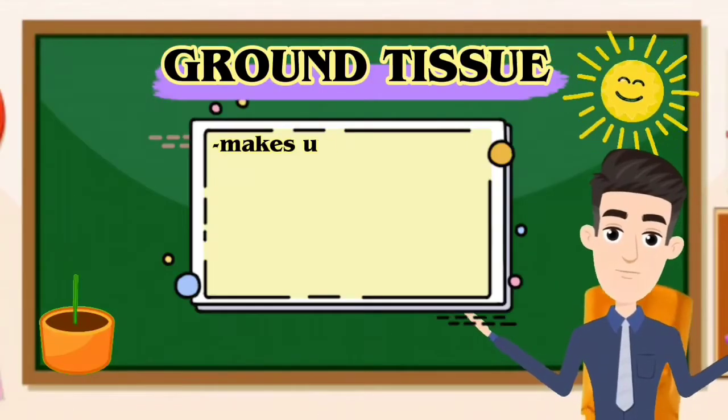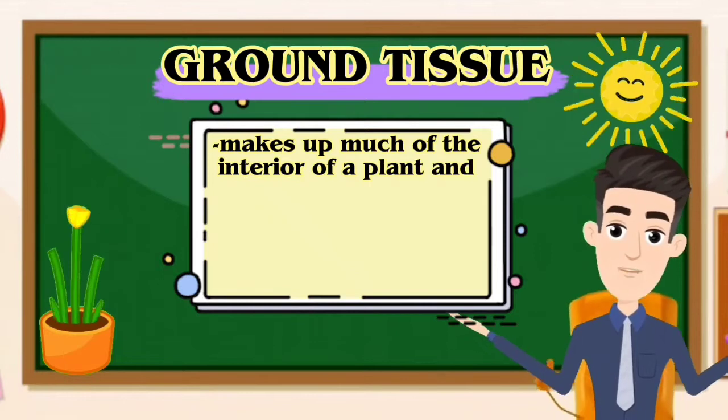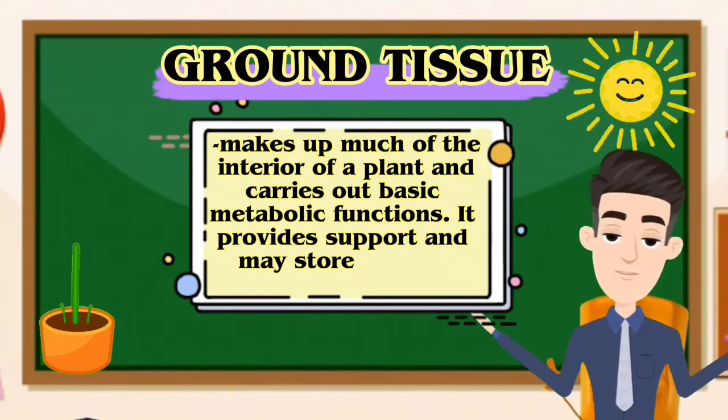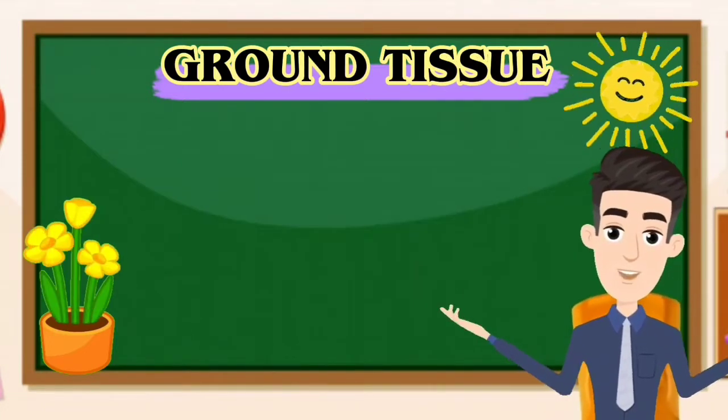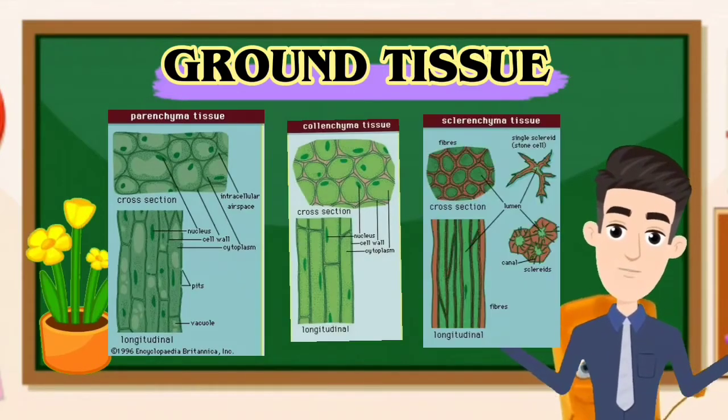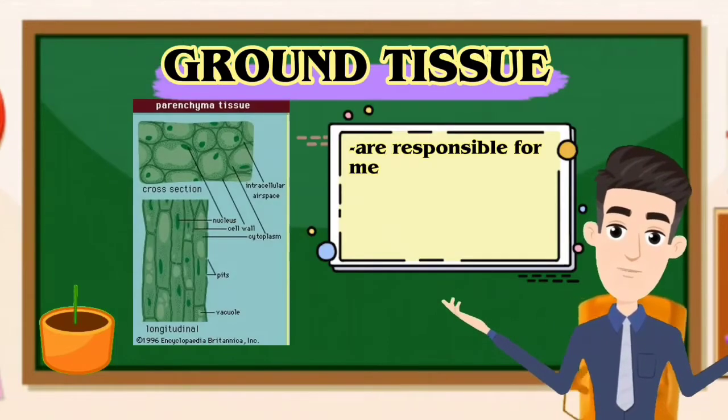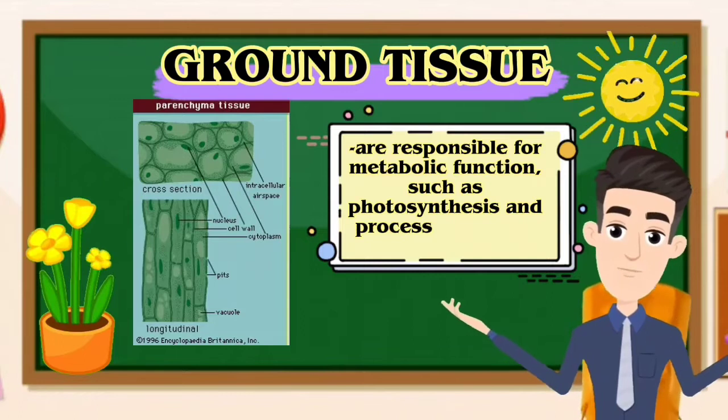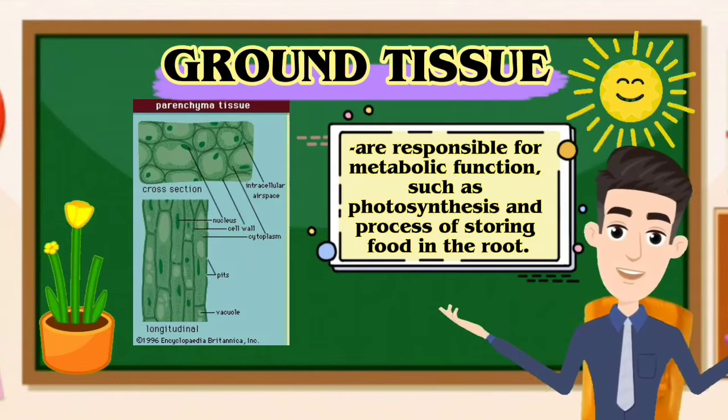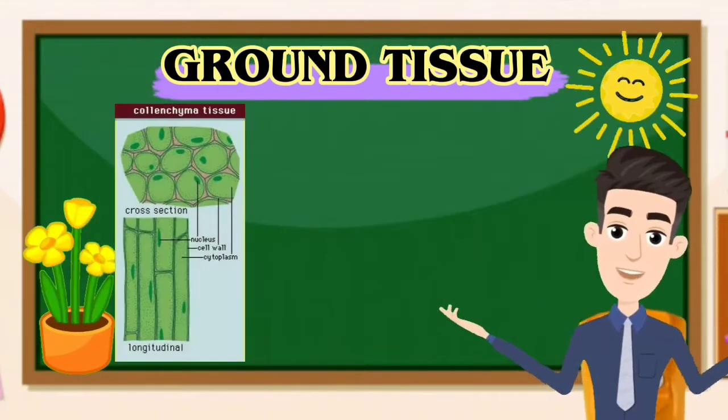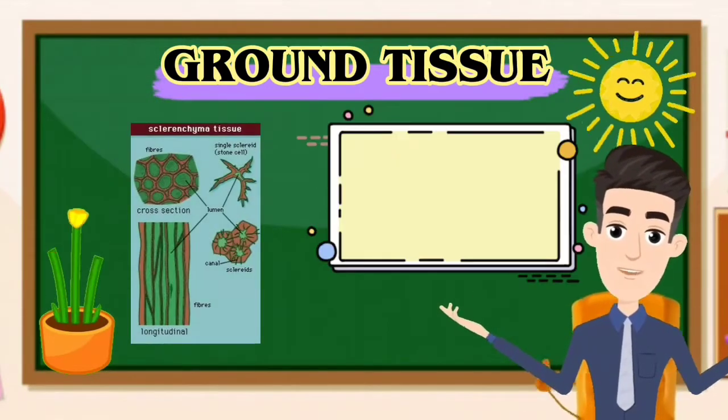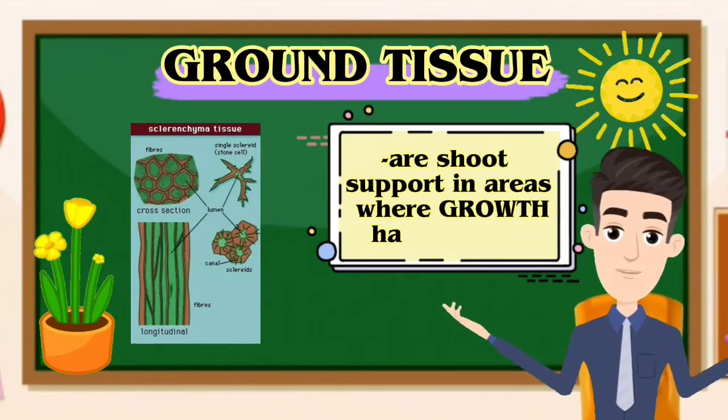Ground tissue makes up much of the interior of a plant and carries out basic metabolic functions. It provides support and may store food or water. Examples of ground tissue cells are the parenchyma cells, collenchyma, and the sclerenchyma. Parenchyma cells are responsible for metabolic functions such as photosynthesis and storing food in the roots, storage of energy mainly in the form of starch and fats. Collenchyma should support in the areas of active growth, and the sclerenchyma should support in the areas where growth has ceased.